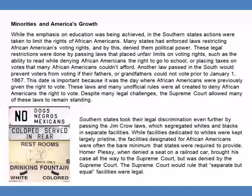Minorities and America's Growth. While the emphasis on education was being achieved, in the southern states actions were taken to limit the rights of African-Americans. Many states enforced laws restricting African-Americans' voting rights, denying them political power. These restrictions included laws requiring the ability to read while denying African-Americans the right to go to school, or placing taxes on votes that many African-Americans could not afford. Another law prevented voters from voting if their fathers or grandfathers could not vote prior to January 1st, 1867 — the date African-Americans were previously given the right to vote. Despite many legal challenges, the Supreme Court allowed many of these laws to remain standing.